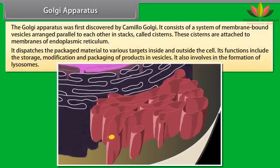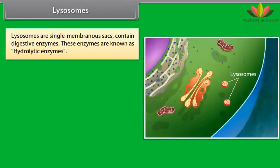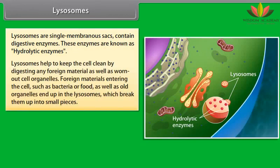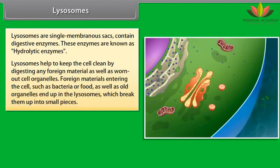The Golgi apparatus was first discovered by Camilo Golgi. It consists of a system of membrane bound vesicles arranged parallel to each other in stacks called cisternae. These cisternae are attached to membranes of endoplasmic reticulum. It dispatches packaged material to various targets inside and outside the cell. Its functions include the storage, modification, and packaging of products in vesicles. It is also involved in the formation of lysosomes.